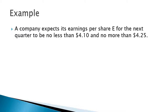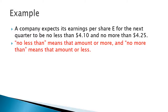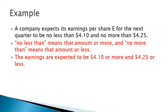Let's try a word problem. A company expects its earnings per share, E, for the next quarter to be no less than $4.10 and no more than $4.25. 'No less than' means that amount or more, so the earnings have to be greater than or equal to 4.10. 'No more than' means that amount or less, so they also have to be less than or equal to 4.25. In other words, it has to be in between the two numbers, and that's our solution — in this case they just wanted you to write the inequality.